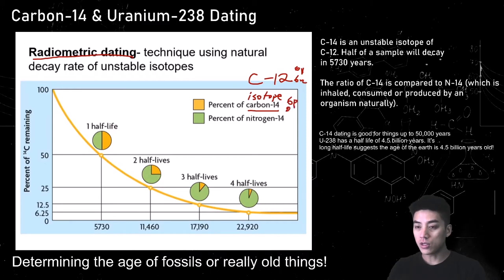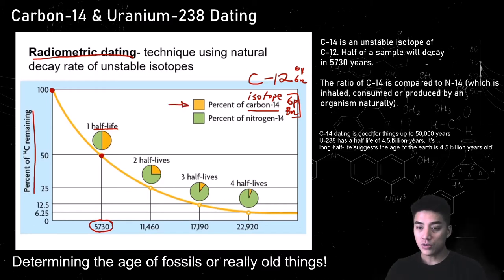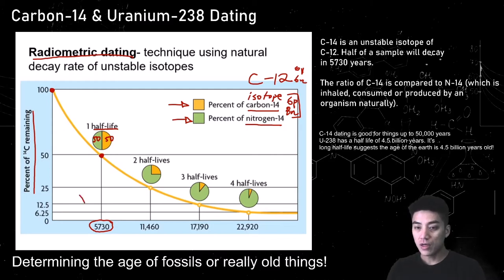Carbon-14 has 6 protons and 8 neutrons, and its half-life is 5,730 years, which means every 5,730 years, half of the sample decays — it breaks down over time because it's unstable. You compare the percentage of carbon-14 to the percentage of nitrogen-14; these are two isotopes consumed by the organism while it's alive. After one half-life, if you find an organism with 50% of its carbon-14 remaining, you could say the age of this organism is 5,730 years old.